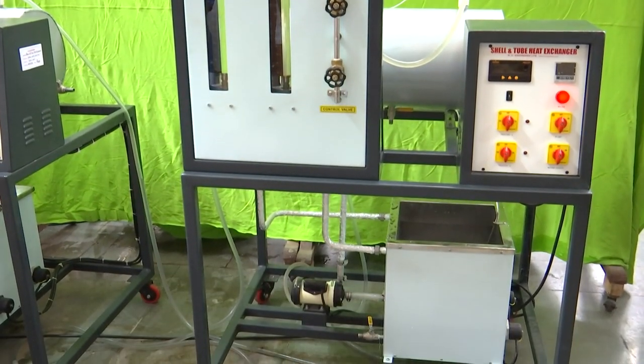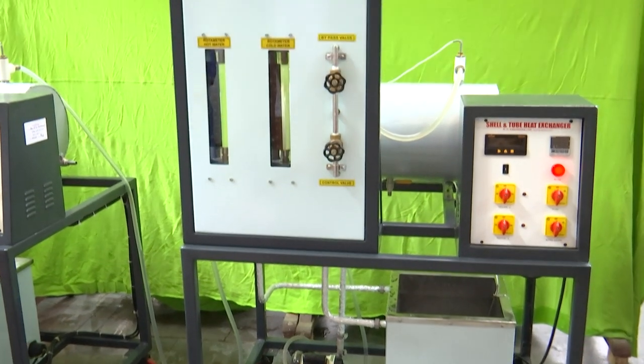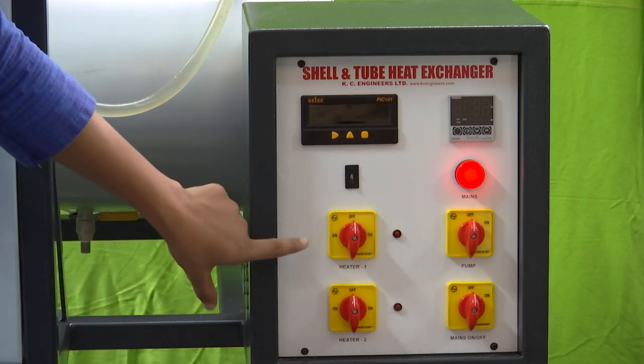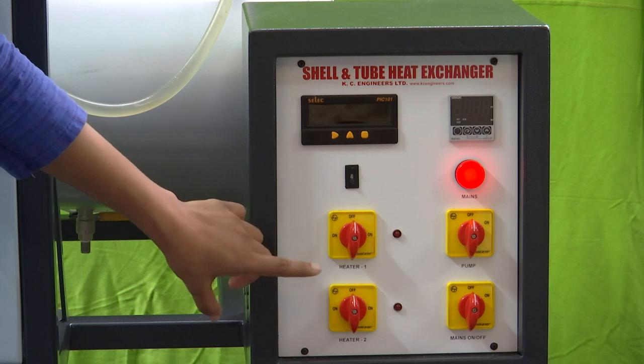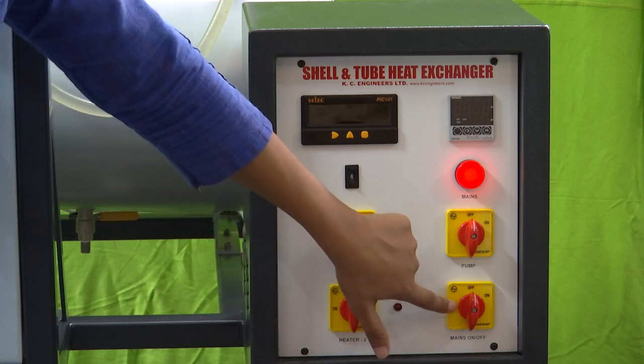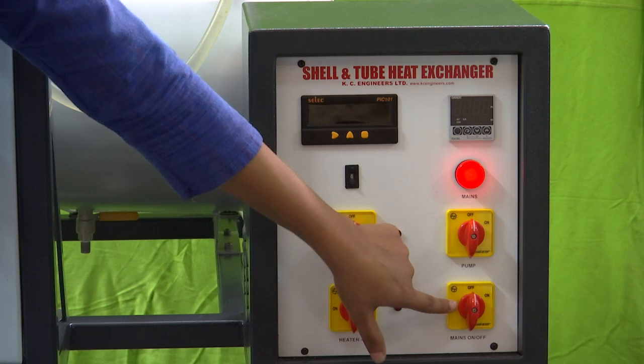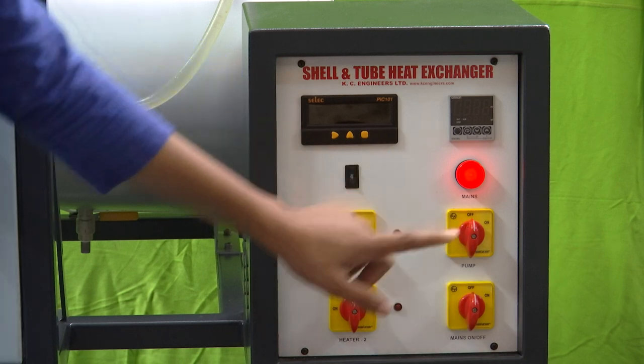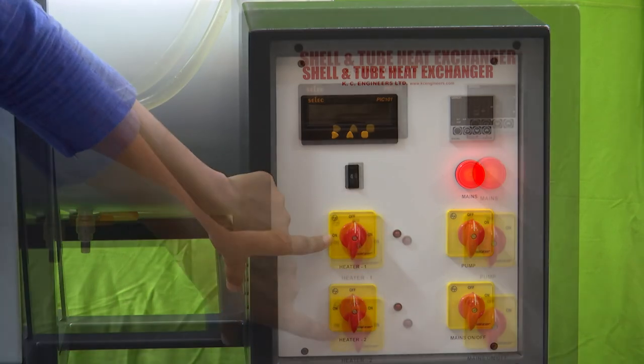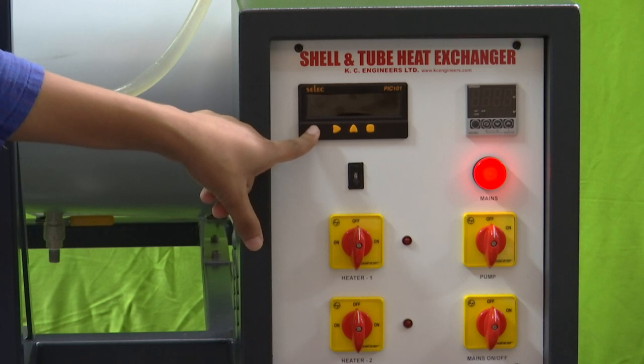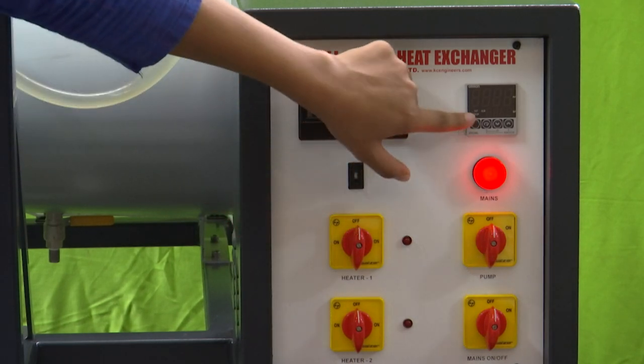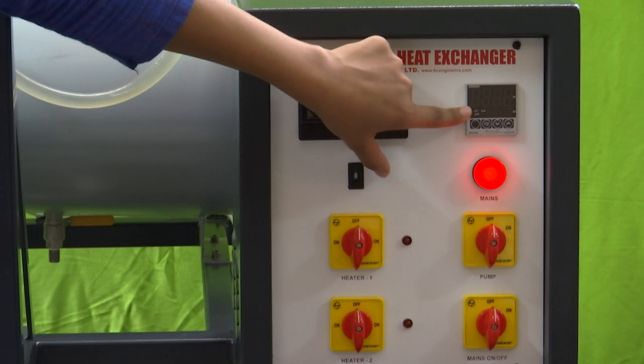Here is the complete experimental setup for our shell and tube heat exchanger experiment. This is the control panel where all the switches are placed. This is the main switch which needs to be turned on first. This is the switch for the pump and these two switches are for heaters. This is where the thermostat measurements are displayed, so for temperatures of inlet and outlet flows. This is the display for set point temperature and the inlet temperature.